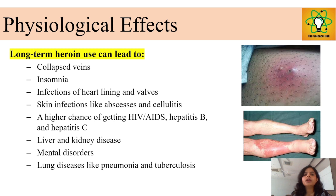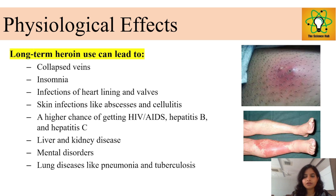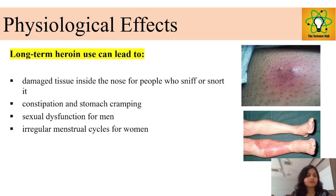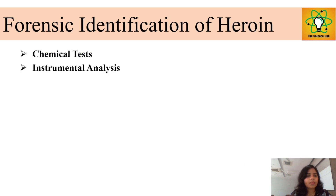Long-term heroin use increases the chance of getting HIV and AIDS, hepatitis B and C, liver and kidney disease, mental disorders, and lung diseases like pneumonia and tuberculosis. It also causes damage to tissue inside the nose for people who snort it, constipation, stomach cramping, sexual dysfunction for males, and irregular menstrual cycles for women.